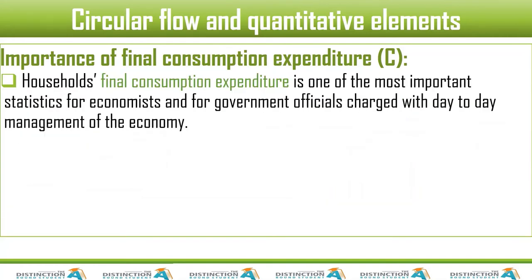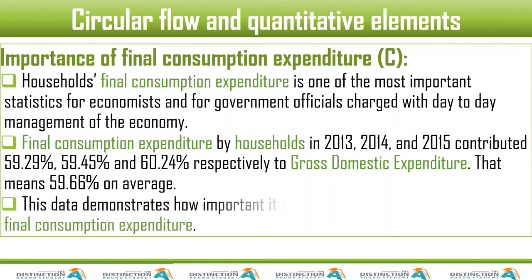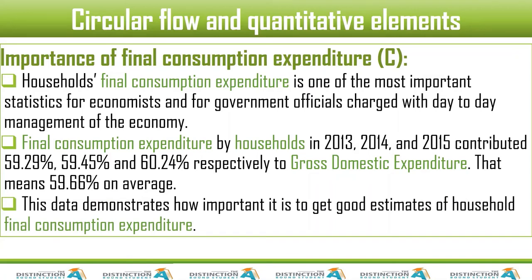Now let's look at the economic significance of C. Household final consumption expenditure is one of the most important statistics for economists and government officials charged with day-to-day management of the economy. Taking three years — 2013, 2014, and 2015 — C contributed 59%, 59%, 60% respectively, with an average of 59.66%. That's a big portion. C is very important.